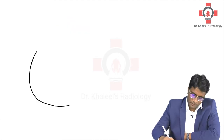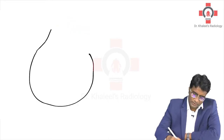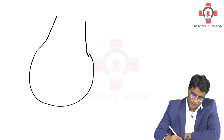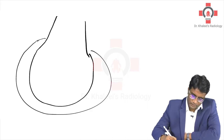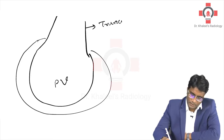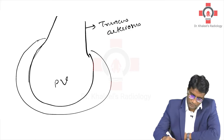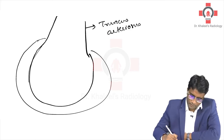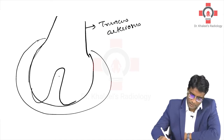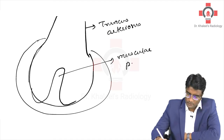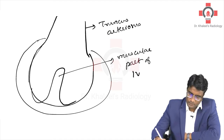Imagine this is the primitive ventricle and this is the truncus arteriosus — a single chamber primitive ventricle and this is the common channel, the truncus arteriosus. From the floor of the primitive ventricle, you have development of the muscular part of the interventricular septum.